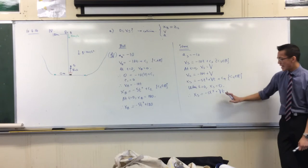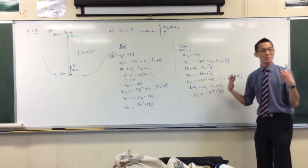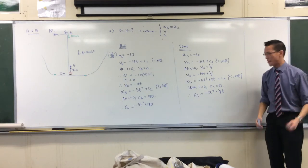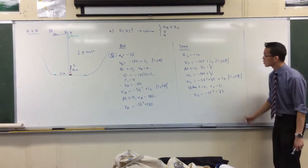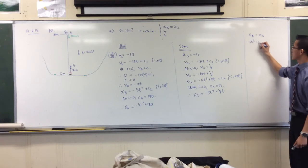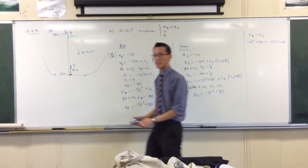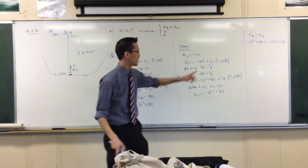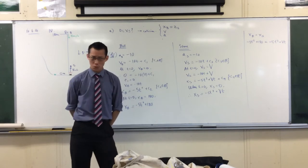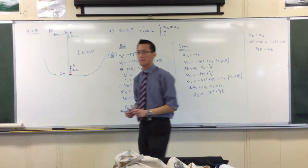Now I know at any time t where both objects are. Setting XB equal to XS for collision: the minus 5t squared terms cancel on both sides, leaving 180 equals Vt. Solving for t gives t equals 180 over V.